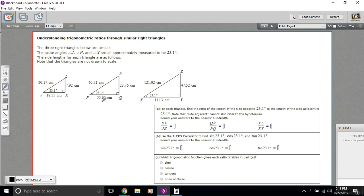So what they want us to do here with these three triangles is to calculate the ratio of side KL over JK and then RQ over PQ. We have an angle here, 23.1. The angle is the same in each of these triangles because these are similar triangles.